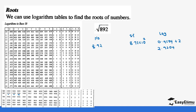Remember, the square root is the same as multiplying by half. If you look at this value, it's the same as 8.92 to the power 1 over 2. As we were doing in the previous lesson, when you have a value to the power n in logarithm, you get the log and then multiply by n. So in this case you multiply by half, which means it's 2.9504 divided by 2, which gives us 1.4752.